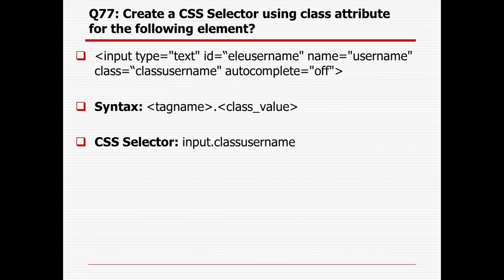The next question is: what is the syntax for a CSS selector using the class attribute? Here, class name is 'class_username'. The syntax for creating a CSS selector using class only is: tag name, dot, class value. So here, tag name is 'input', dot, and class value is 'class_username'. That's how you can create a CSS selector using class value only.